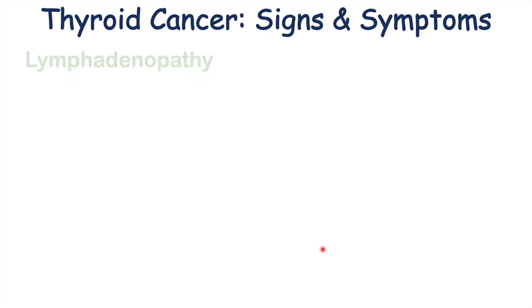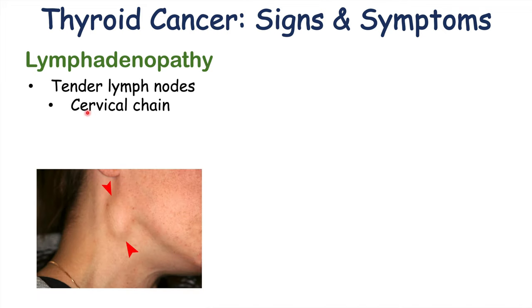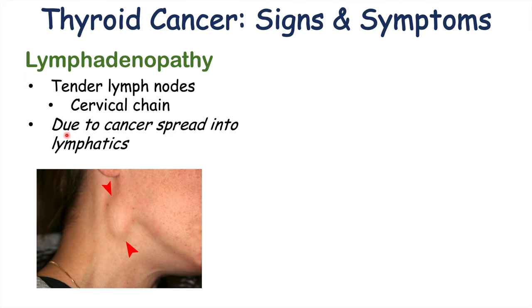Other important signs and symptoms of thyroid cancer include lymphadenopathy — swollen, tender lymph nodes. These are most commonly found in the cervical chain, in the neck area, and are due to the thyroid cancer spreading into the lymphatics. This can occur in some patients, especially those who are in later stages of the disease.